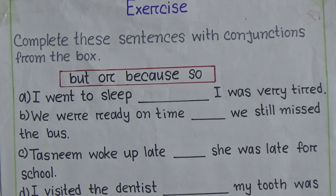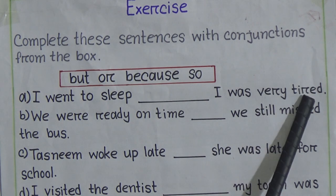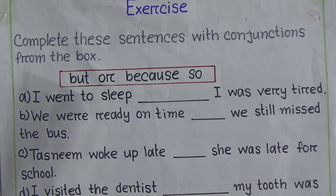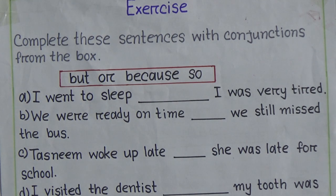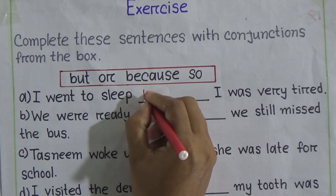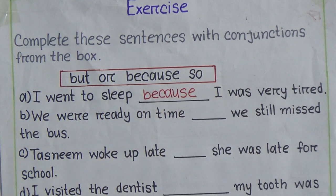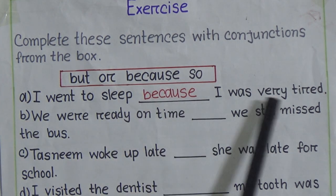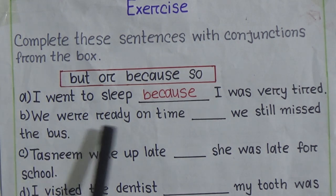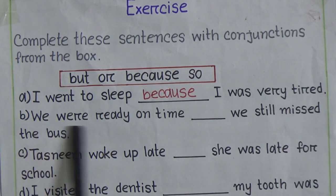Number a: 'I went to sleep ___ I was very tired.' Why did you go to sleep? Because you were tired. So the answer is 'because': 'I went to sleep because I was very tired.' In the gap we write 'b-e-c-a-u-s-e'.